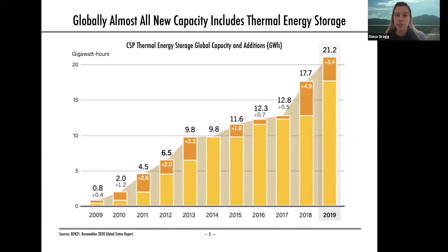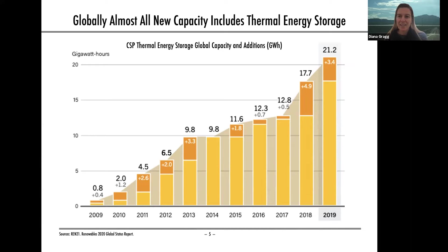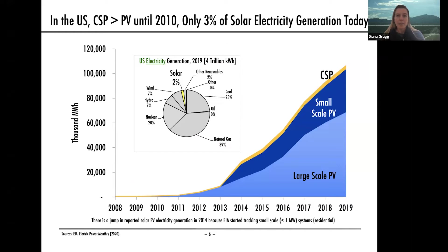Most of the capacity that is growing includes what's called thermal energy storage. One of the values that concentrating solar power has over a system like photovoltaics is this thermal energy storage, which can be part of the system. This allows the CSP plant to continue to operate after the sun has gone down. How long it operates depends on how much thermal energy storage is added and how you're running your plant. We're now around 21 gigawatt-hours of solar thermal energy storage at CSP plants globally.